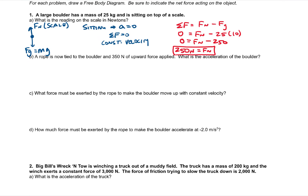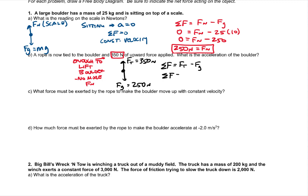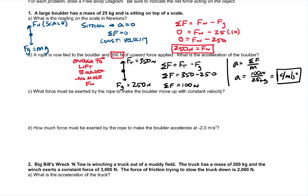Now we're going to tie a rope to the boulder and pull upward with 350 newtons. I want to know what the acceleration is. Pulling up greater than the weight is enough to lift the boulder, so there's no more normal force. Down we have the weight of 250 newtons, and up we have the tension force of 350 newtons. Net force is 350 minus 250, which equals 100 newtons. Acceleration is net force over mass: 100 divided by 25 equals 4 meters per second squared.